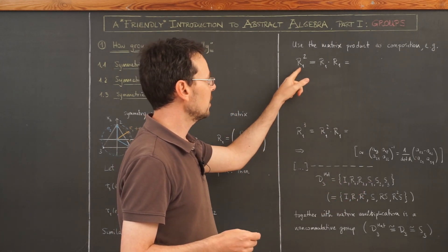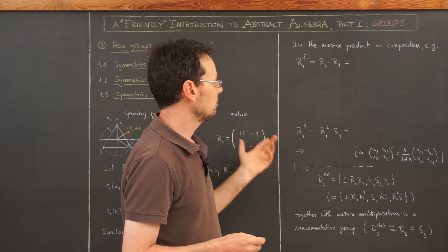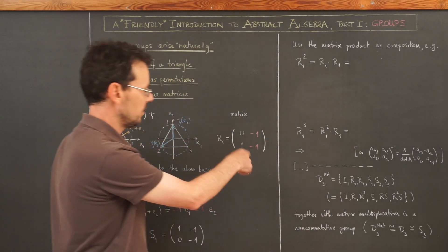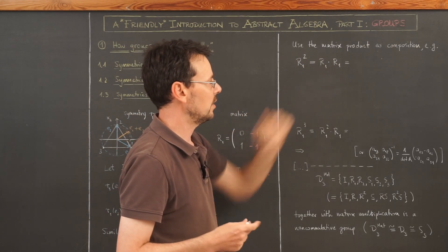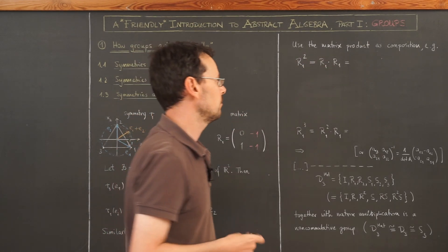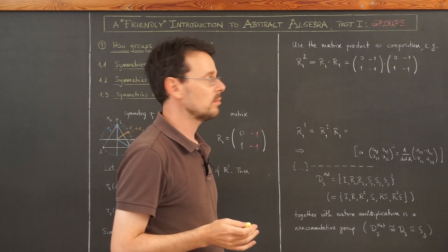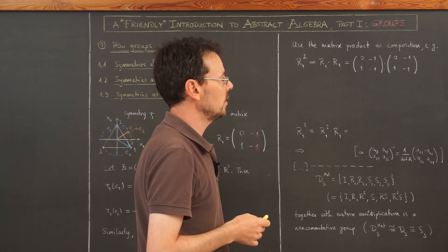For example, I can then calculate R1, which we found here, squared, which is defined as the product of R1 with itself. Let's do this. Here's just a quick reminder how to do that.